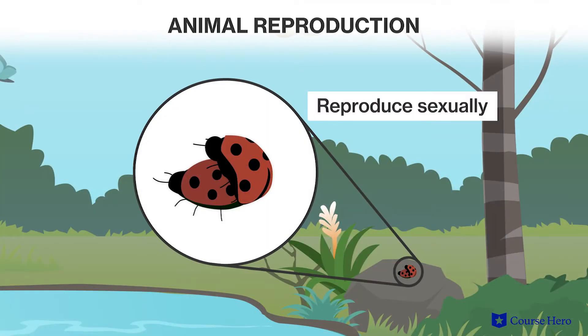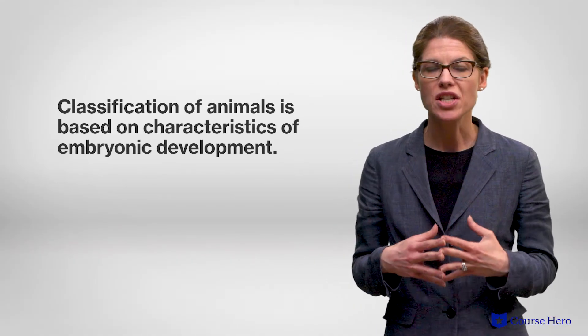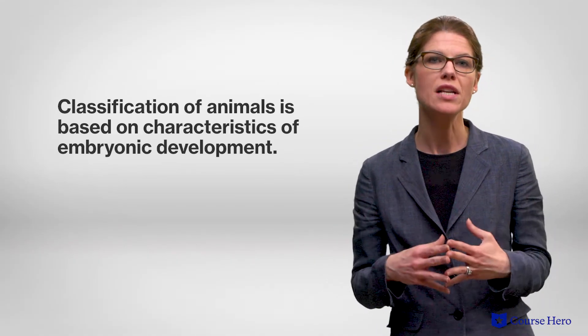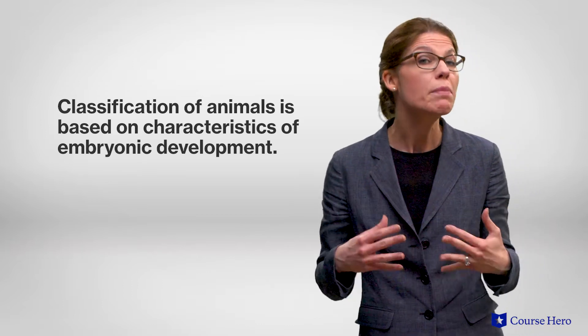Animal reproduction is mostly sexual, but some species are able to reproduce asexually. The current classification of animals is primarily based on characteristics of embryonic development and whether or not the animal molts, which is when they shed their outer covering to make room for growth.